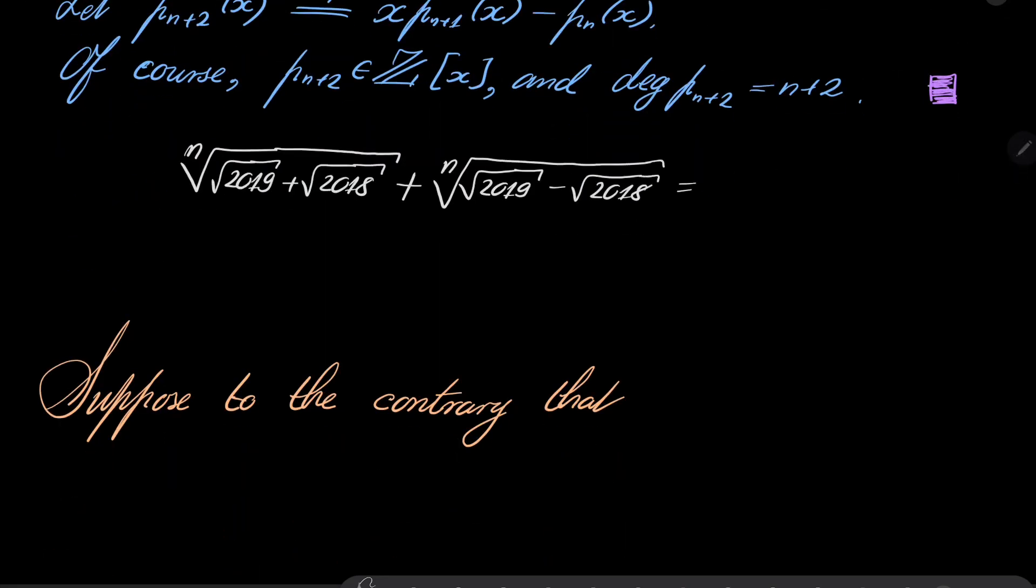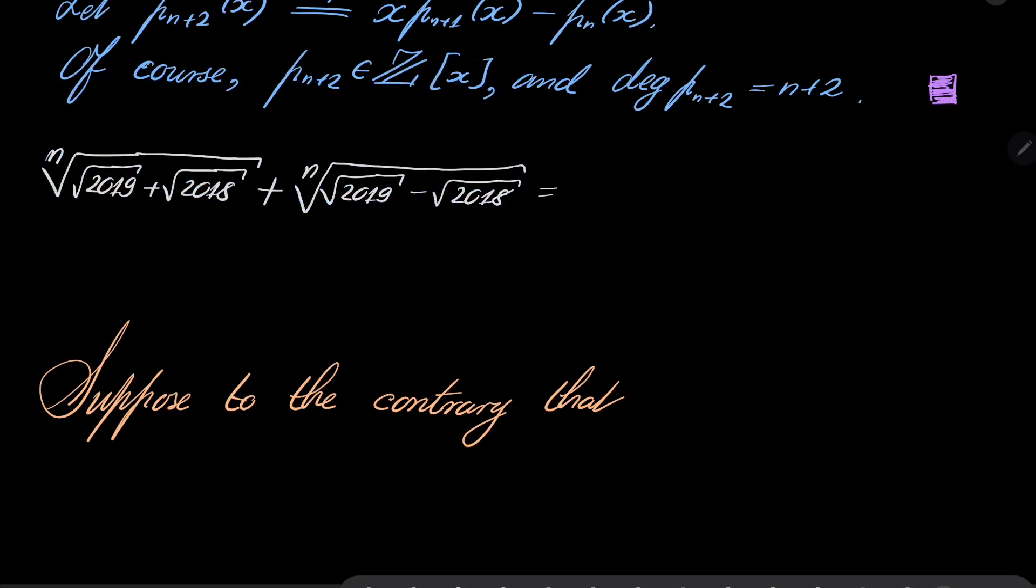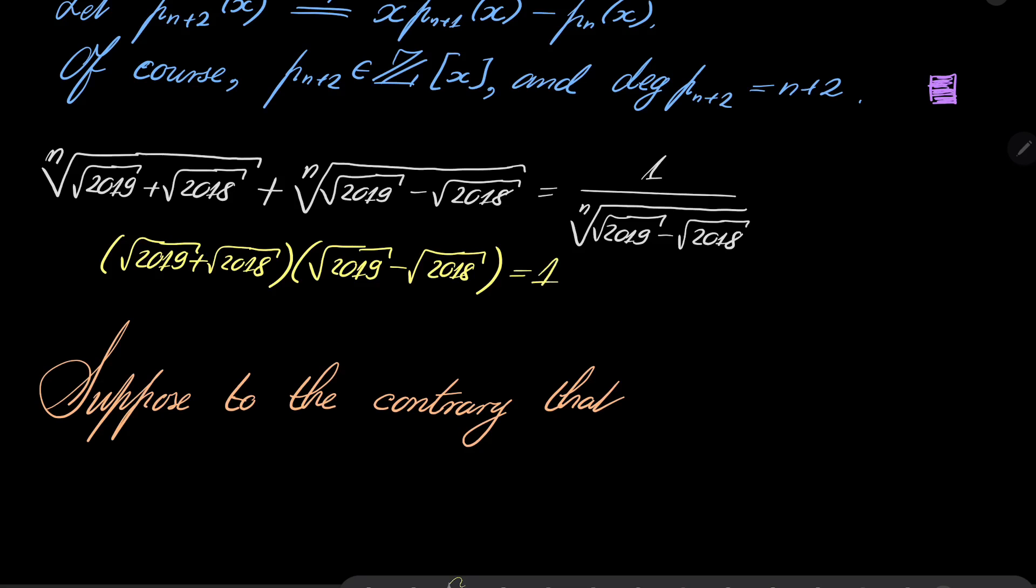Now, notice the following: this expression can be written in this way. I can replace my first root by 1 over nth root of (√2019 - √2018). Well, why is that? Because if you take these two numbers and you multiply by difference of these roots, what do we have? Well, you just get one. So it justifies that. And now, let's just call, for the sake of brevity, let's just call this number α.